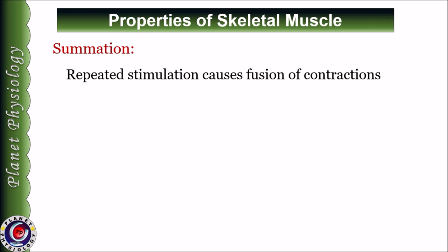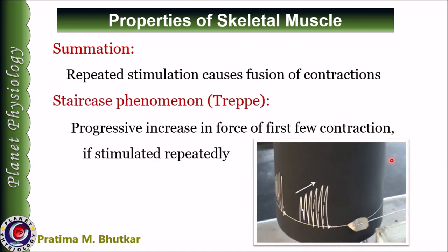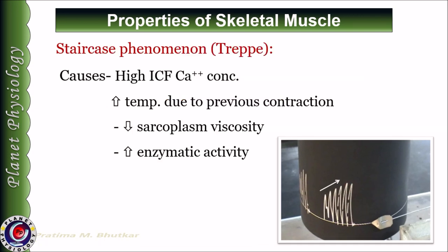Coming to the next property: summation. Summation means addition — it is defined as fusion of contractions with repeated stimulation of the muscle. The degree of fusion depends on the frequency of stimulation. When frequency of repeated successive stimulation is low, muscle contractions occur one after another with progressive increase in force of the first few contractions, termed the staircase phenomenon or treppe. The cause for this increase in force is increased calcium in the sarcoplasm as well as increased temperature of the muscle due to previous contraction.